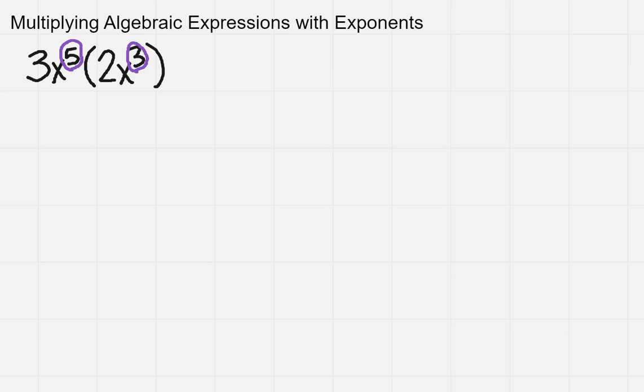Now, remember, we can only multiply like things. So I see here I've got a number and a number, so I can take the 3 and multiply it by 2, which will give me 6.